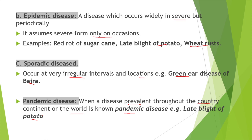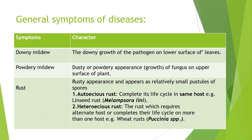Here an important table is given with diseases and their important characteristics. First disease is downy mildew: the downy growth of the pathogen appears on the lower surface of the leaves. Second is powdery mildew: a dusty and powdery appearance of fungus on the upper surface of the leaf.